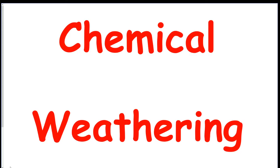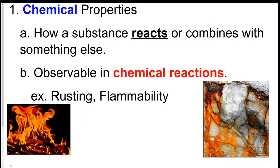Chemical weathering. We talked about physical properties, meaning you would just break something and then the material would stay the same. Chemical is totally different. This is going to be some type of chemical reaction that occurs and the substance will be completely different than the one it was originally.